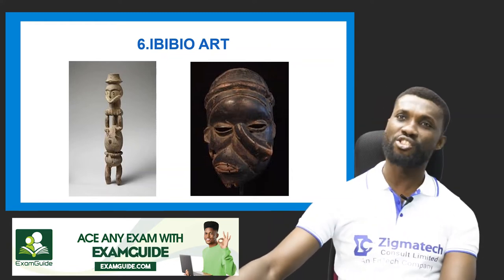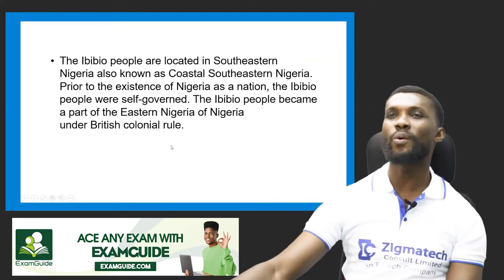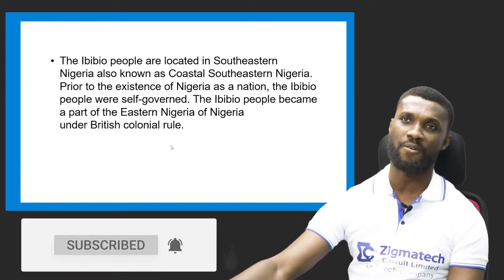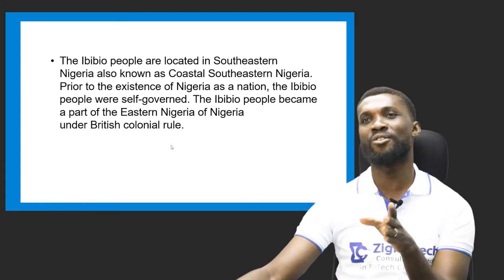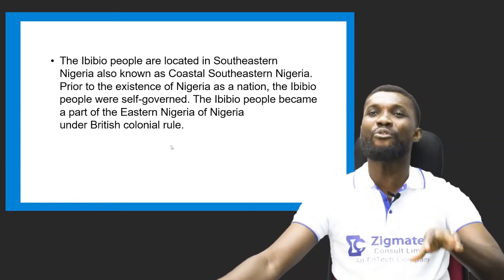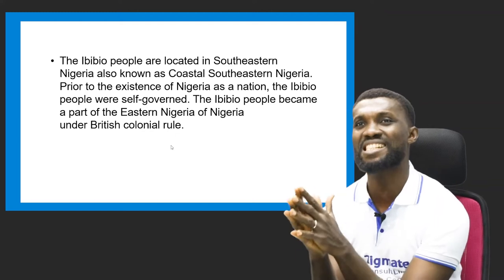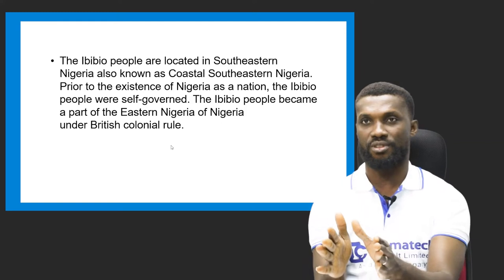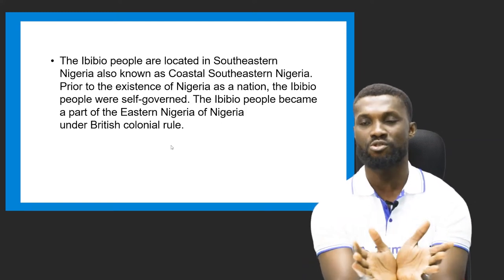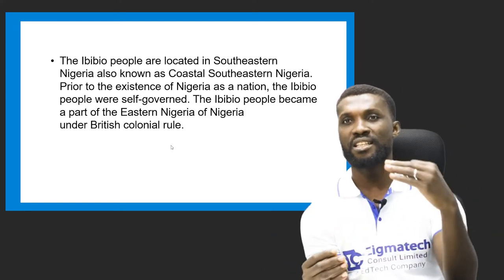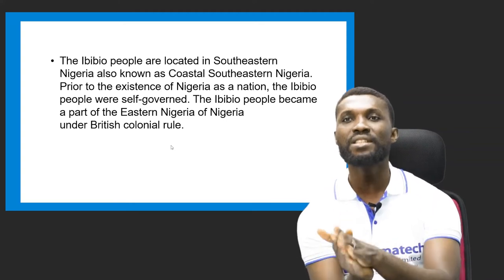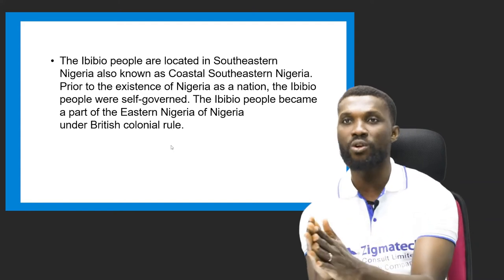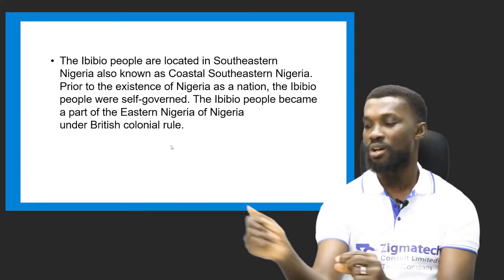Now let's look at a brief history of the Ibibio people. The Ibibio people are located in the south and eastern Nigeria, also known as the Cross River area — the southern Nigeria region. Prior to the existence of Nigeria as a nation, the Ibibio people were self-governed. They became a part of eastern Nigeria under British colonial rule.